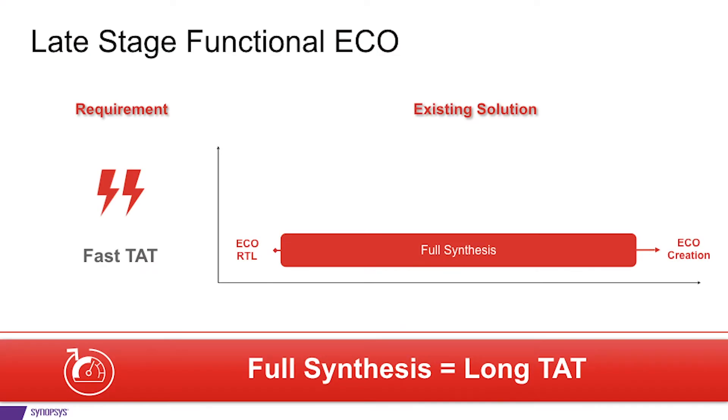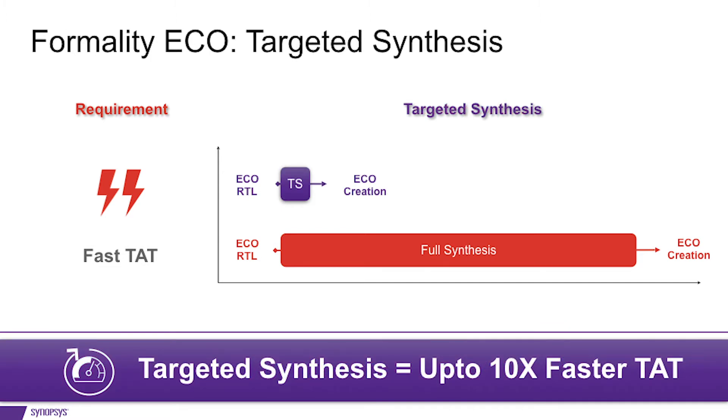Before I talk about Targeted Synthesis, let me briefly talk about functional ECOs. Functional ECOs are very common. Customers are routinely doing multiple ECOs and these all have to be done yesterday, which means the turnaround time is a very critical metric for any auto ECO tool. One of the biggest bottlenecks is the false perception that a full compile of the ECO RTL is required to kickstart the auto ECO process. Formality ECO is changing this requirement, especially given that the ECO change is only to a small part of the design, like a few modules. So there is really no need to compile the full design to start your ECOs.